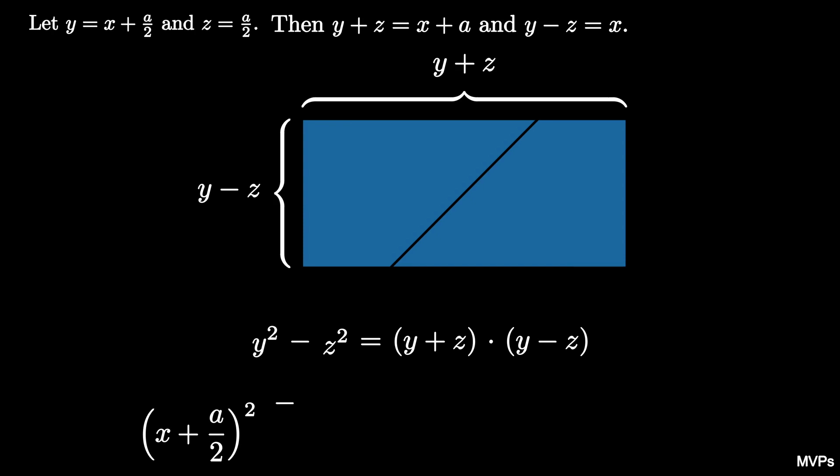Then the resulting equation becomes x plus a over 2 squared minus a over 2 squared is equal to x plus a times x. But the latter quantity is just x squared plus a times x.